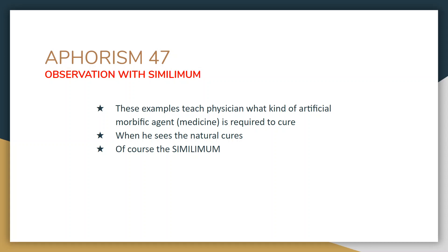Now, you are in final year, so you will be asked to explain how homeopathy is a natural science. Because Dr. Hahnemann has given such observations in aphorisms 36, 38, 40, and 43 — what happens when two dissimilar diseases meet and what happens when two similar diseases meet in nature. These are clear-cut phenomena, clear-cut observations of pure experience — no imaginations. Dr. Hahnemann is giving us clear evidence of this natural phenomenon.